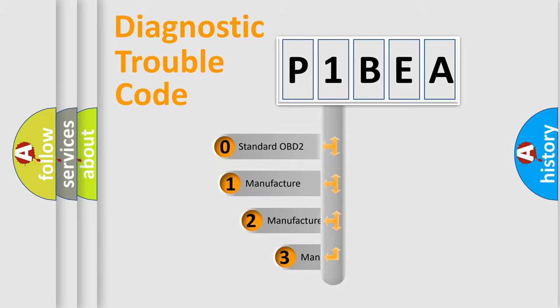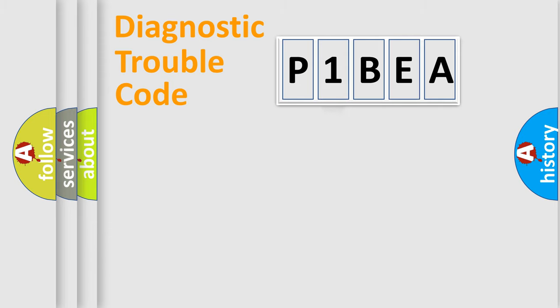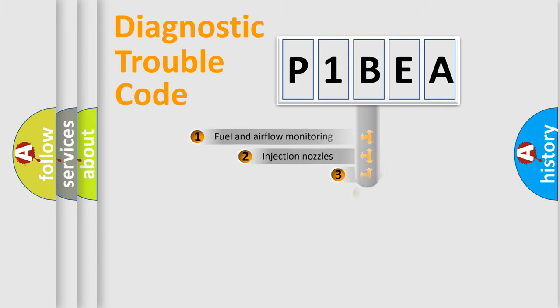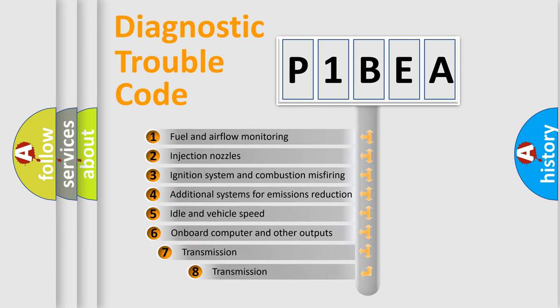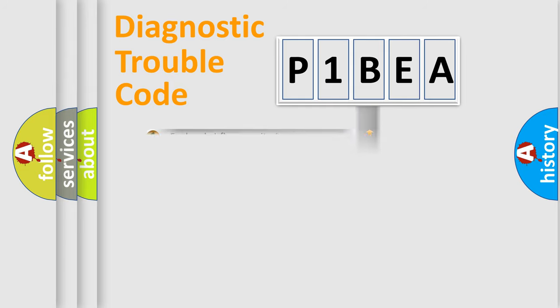If the second character is expressed as zero, it is a standardized error. In the case of numbers 1, 2, or 3, it is a manufacturer-specific expression of the car specific error. The third character specifies a subset of errors. The distribution shown is valid only for the standardized DTC code.